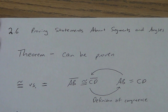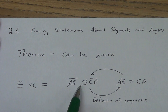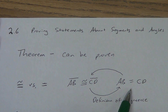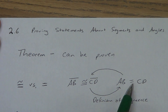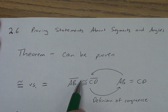Good definitions always work both ways. If it's a right angle, then it's 90. If it's 90, then it's a right angle. If I have congruence, then I can switch it to equals — definition of congruence. If I have equals, I can switch it to congruence — still definition of congruence.